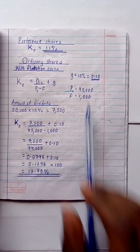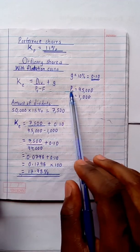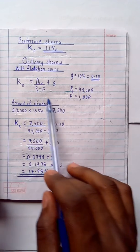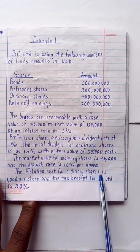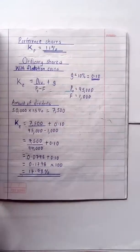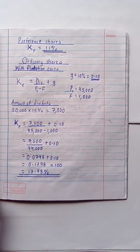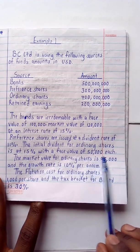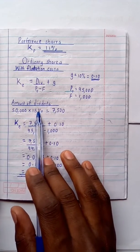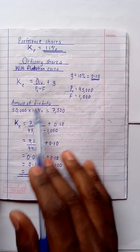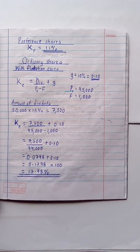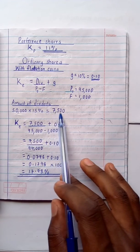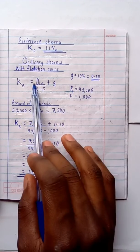From the question: G = 10% = 0.10; market value (P₀) = 95,000; flotation cost (F) = 1,000. For the dividend: 15% × 50,000 = 7,500. So dividend D = 7,500.